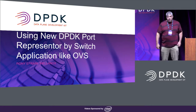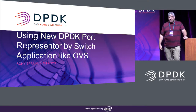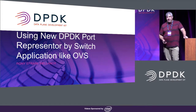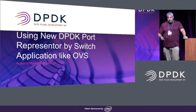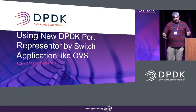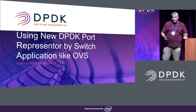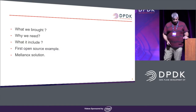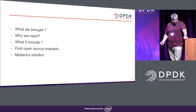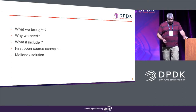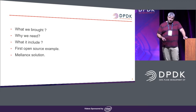Yesterday we showed how you can use VXLAN in order to create a switch that is functioning well for virtual interfaces, and then we want to extend it to support switches. What I want to present now is using a new DPDK port representer for switchdev applications like OVS. I will explain why we need it, what it includes, the open source work we can use, and a little bit about what Mellanox is doing.